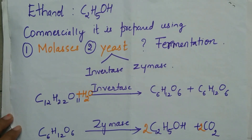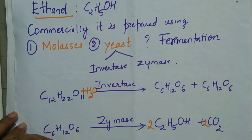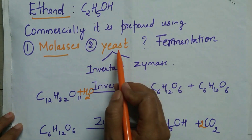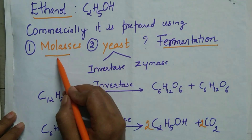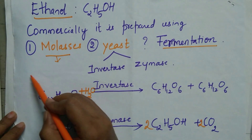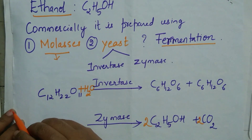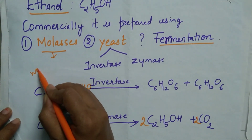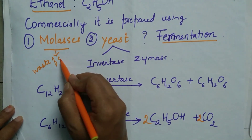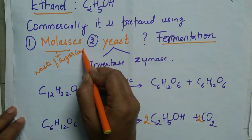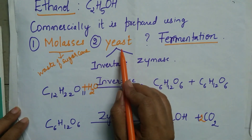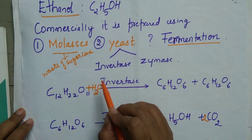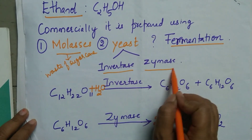The second important alcohol is ethanol. Commercially it is prepared using molasses and yeast by fermentation. Molasses is a dark syrupy liquid left after extraction of sugar from sugarcane — it is a waste product of the sugarcane industry. Yeast is a microorganism which contains two enzymes: invertase and zymase.